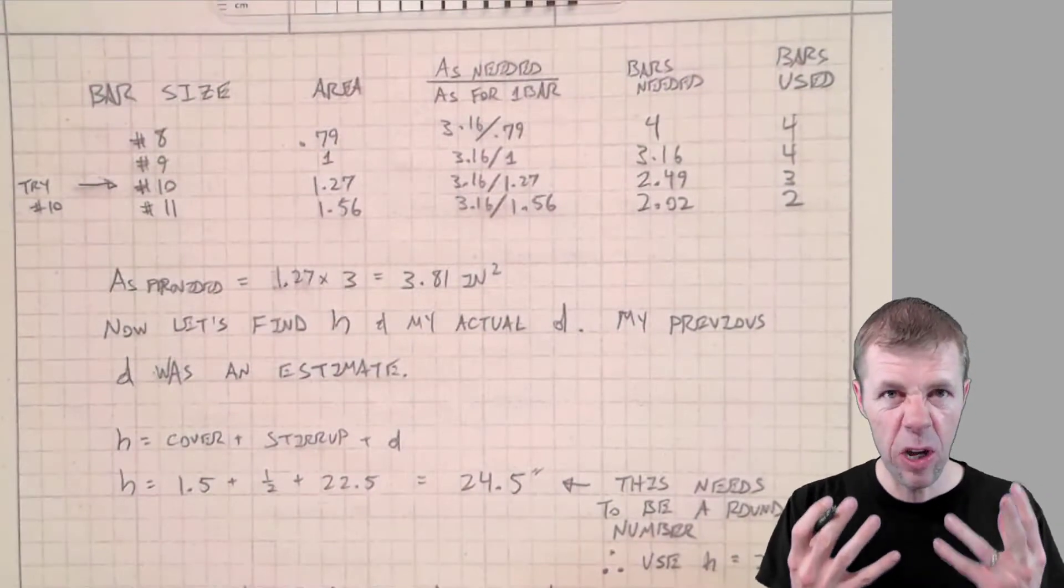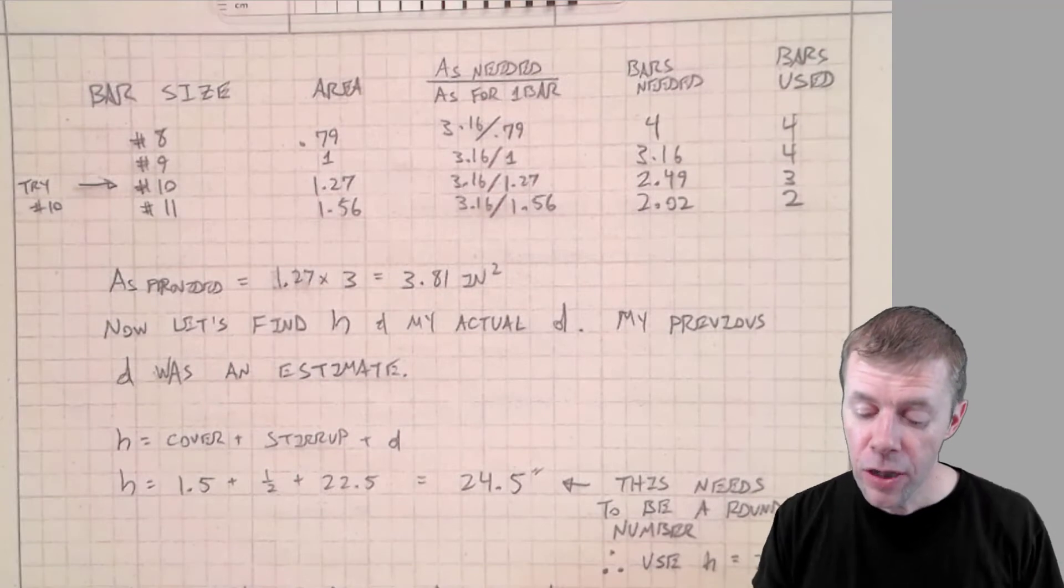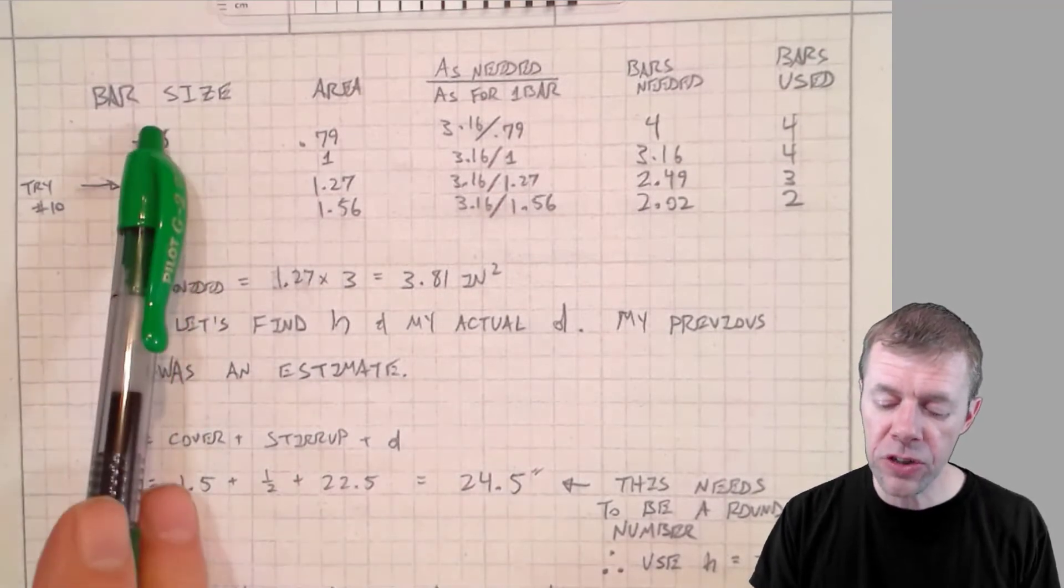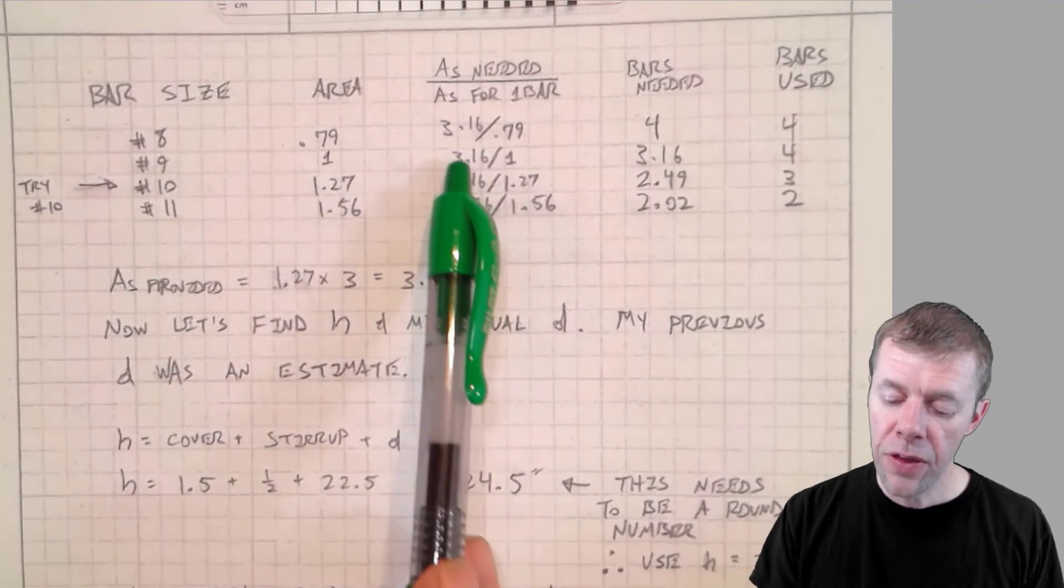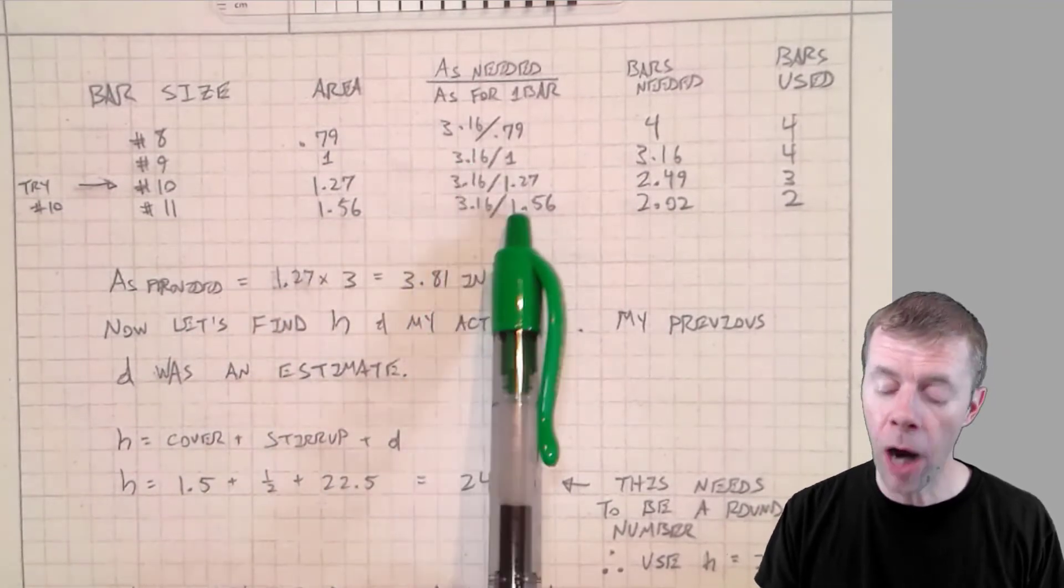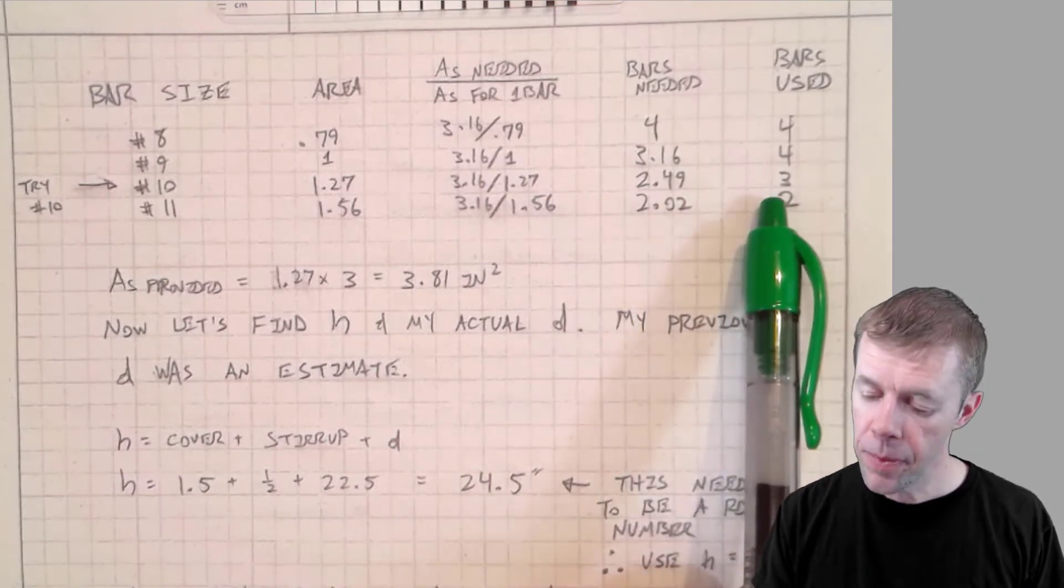Now that I have my estimate for my area of steel, I've got to figure out how many bars I want. So I can choose all kinds of different sizes of bars. Here's the different areas. Here is the math I'm doing to figure out how many bars I need. And then I'm going to round up.